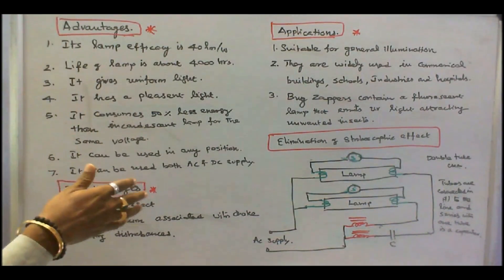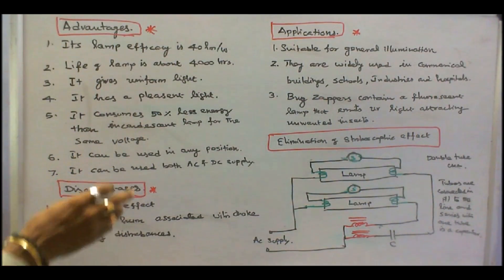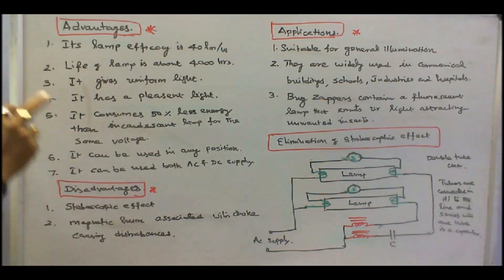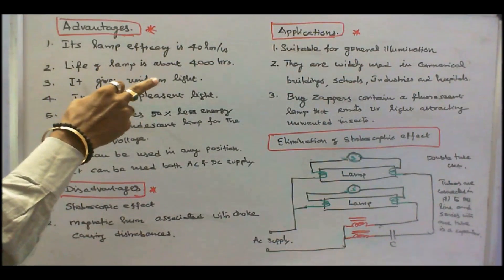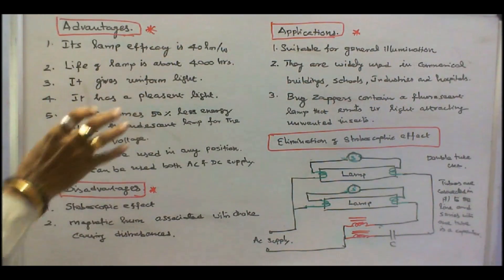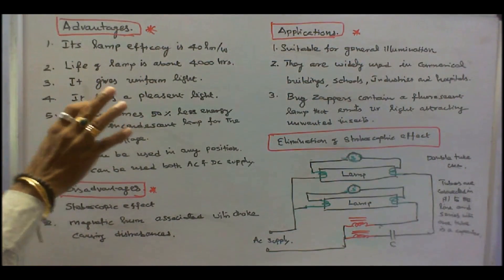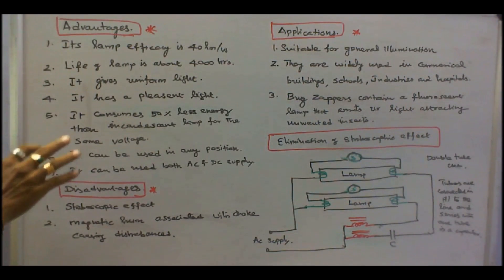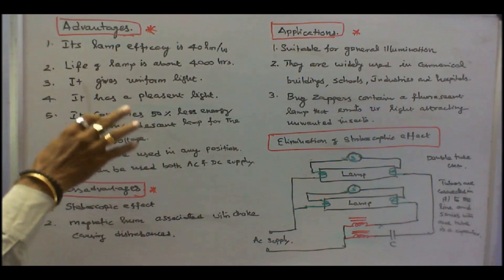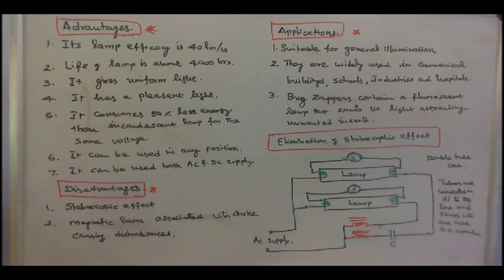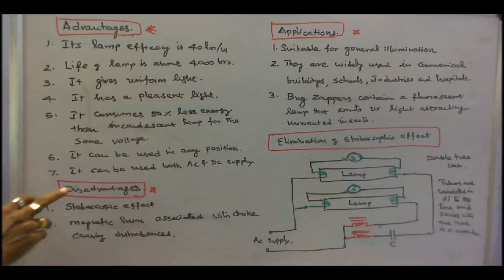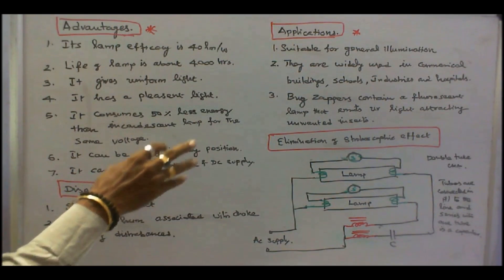These are all the advantages of fluorescent tube light. Number 1, its lamp efficacy is 40 lumens per watt. Number 2, life of lamp is about 4000 hours. Number 3, it gives uniform light. Number 4, it has a pleasant light. Number 5, it consumes 50% less energy than incandescent lamp for the same voltage. Number 6, it can be used in any position. Number 7, it can be used both AC and DC supply.